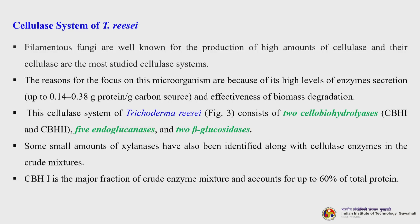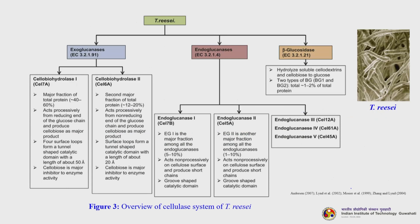The cellulase system of Trichoderma reesei is one of the most widely studied, as it is a highly adapted filamentous fungus for producing large amounts of cellulase. Key reasons include its high levels of enzyme secretion — approximately 0.14 to 0.38 grams protein per gram of carbon source — and its effectiveness at biomass degradation. Its cellulase system consists of 2 cellobiohydrolases (CbH1 and CbH2), 5 endoglucanases, and 2 beta-glucosidases, along with some xylanases. CbH1 is the major fraction, accounting for up to 60% of total protein.